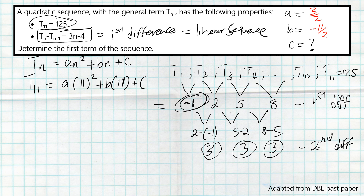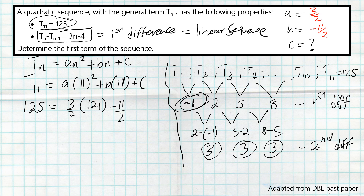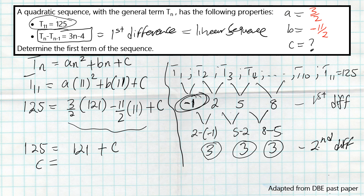T11 = 125, a = 3/2, 11² = 121, b = −11/2, into 11, plus c. Using a calculator: (3/2)(121) + (−11/2)(11) = 121. So 125 = 121 + c, giving c = 125 − 121 = 4.